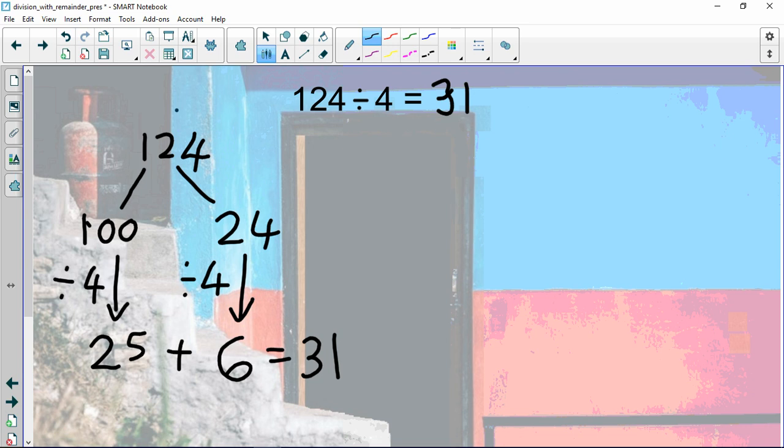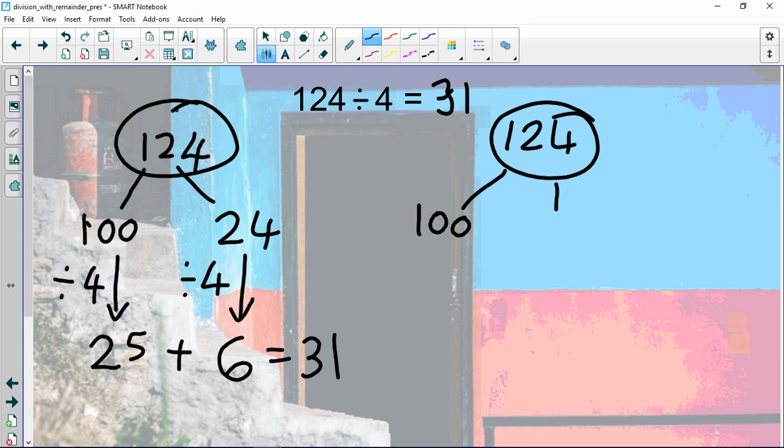The next way is by partitioning and using what we know of our times tables. So we have 124 again at the top, same number, the divisor is still four, and we're going to split it into all three of its sections this time. So we're going to go into 120 and 4, the hundreds, tens and ones. Now we know that the divisor is 4, so we can use our knowledge of times tables and division to help us to solve this easily.